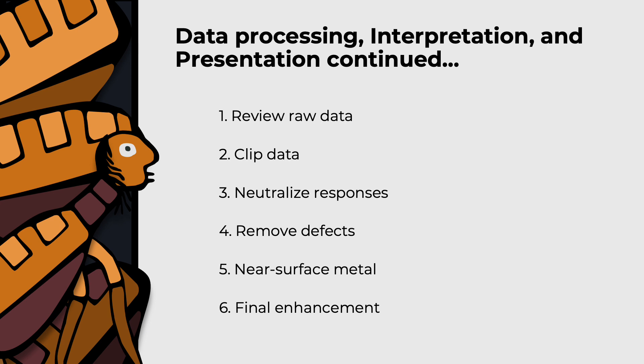Data processing should follow the sequence of steps recommended by the instrument manufacturer and software used. These might include but are not limited to: reviewing the raw data; clipping data to remove noise spikes that affect statistical calculations of subsequent processing steps; neutralizing major responses, for instance like fences or services; removal of data collection defects like traverse stripping or staggered data; iron spike removal to eliminate very large responses of near-surface metal — caution is needed here as iron coffin fixtures and nails may be the only indicator of the presence of a burial; and finally, the final enhancement of data plots, including interpolation, which artificially increases the number of data points to give the data plot a smoother appearance.